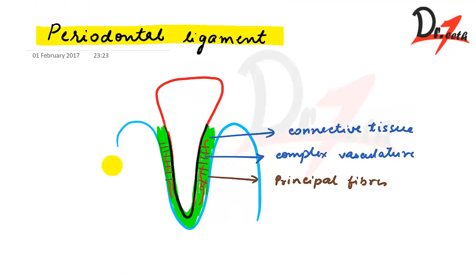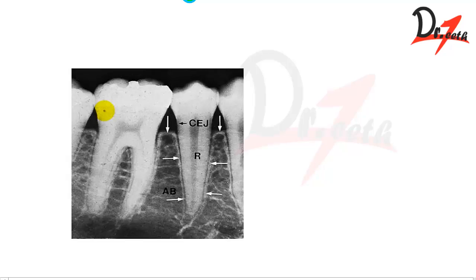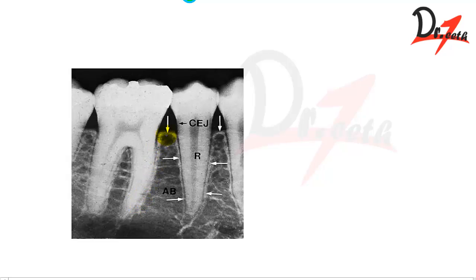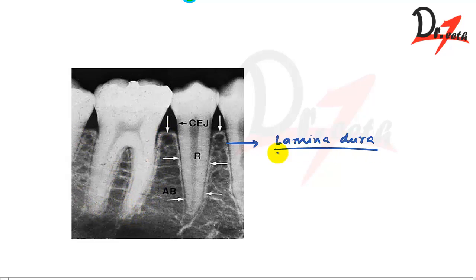This is a radiograph of the mandibular premolar region. We have two types of bone: you can find this white line going throughout — this is the lamina dura, which is the part of the alveolar bone that covers the alveolus.